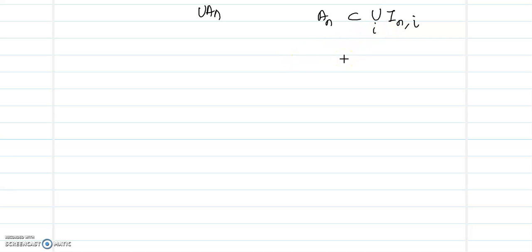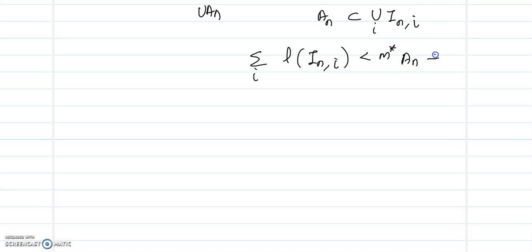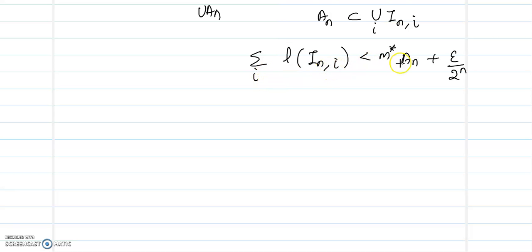So, for any epsilon greater than 0, the summation over i of the lengths l(Iᵢₙ) will be less than M*(Aₙ) plus epsilon by 2ⁿ. For some epsilon greater than 0, if Aₙ is contained in the union of Iᵢₙ, then M*(Aₙ) + ε/2ⁿ will be greater than the summation over i of l(Iᵢₙ).